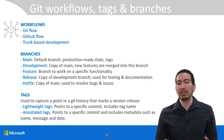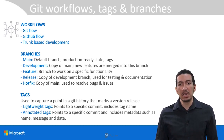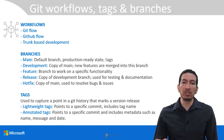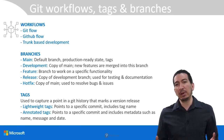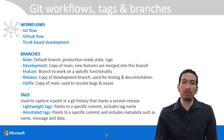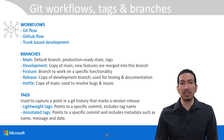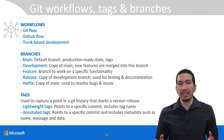After certain features are complete, you can merge the changes from the development branch into a branch known as release. Here you will test and make sure that the new features are working as expected, which you will then merge into the main branch. The hotfix branch is just a copy of the main branch, and the purpose of this branch is to resolve bugs and fix issues, which you would then merge back into the main branch.